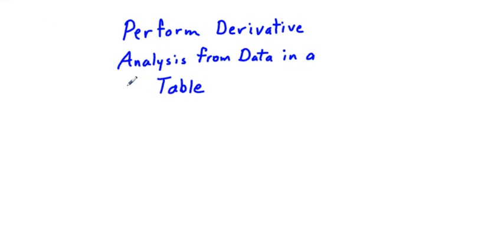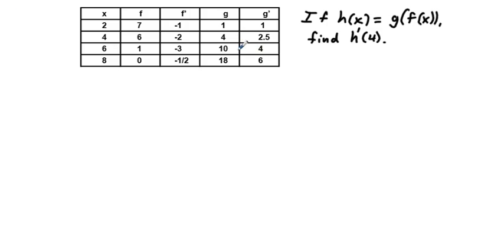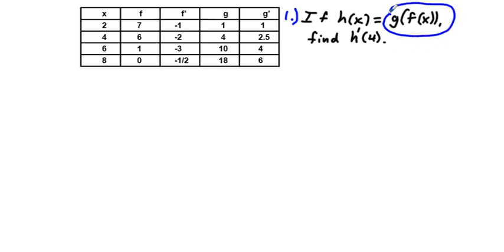We're going to perform derivative analysis from data in a table, and here is this table. We're going to work four problems from this same table. The first one, problem number one: if h of x equals g of f of x, find h prime of four. This form — a function of something inside of a function — tells you this is a chain rule situation.